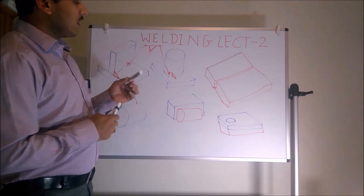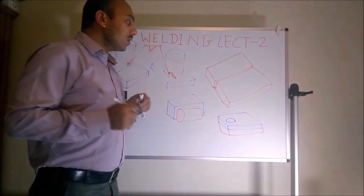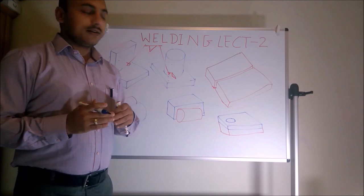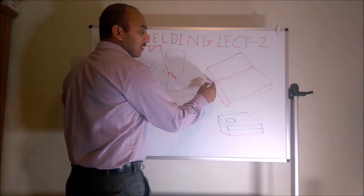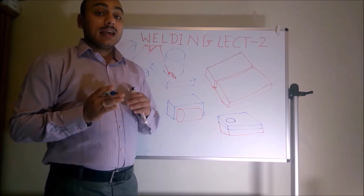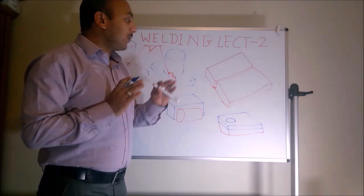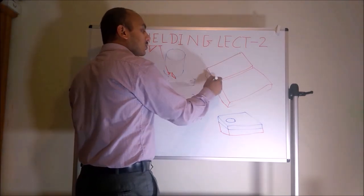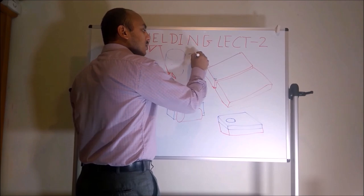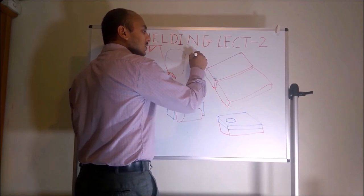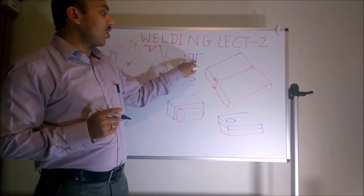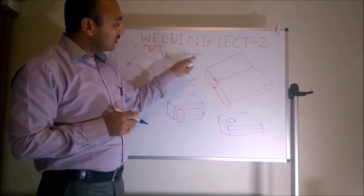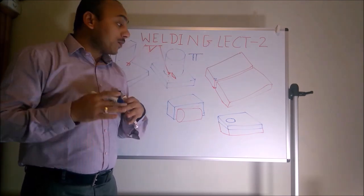Now let us discuss when plates are parallel. If plates are parallel, we can use groove weld. If we cannot provide any edge preparation on those surfaces, we can directly use the square weld — its symbol is two parallel lines. This is applicable when surfaces are parallel to each other.